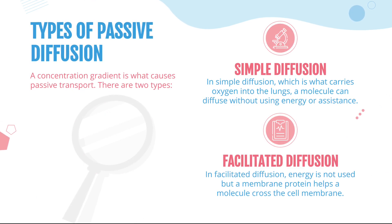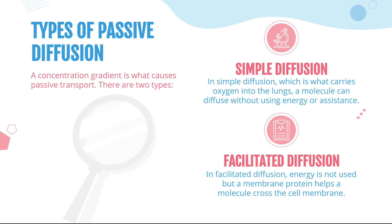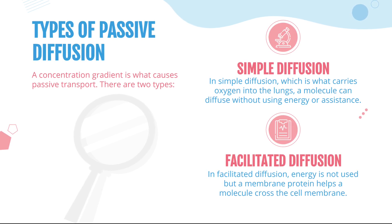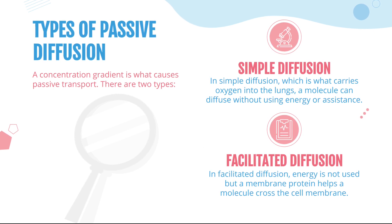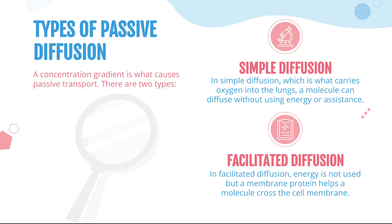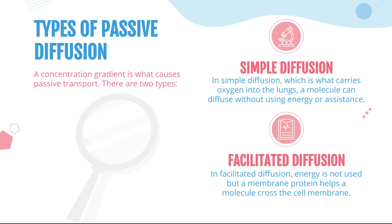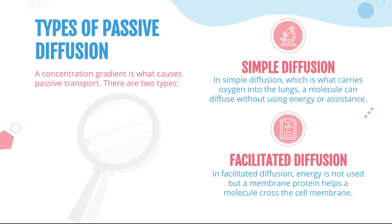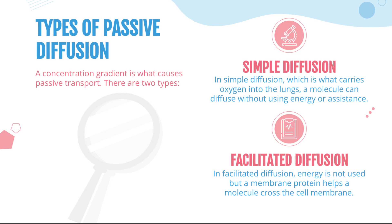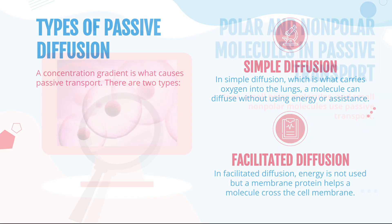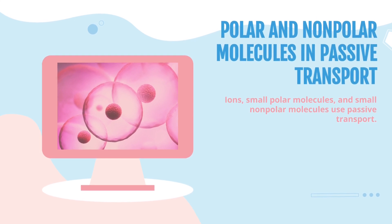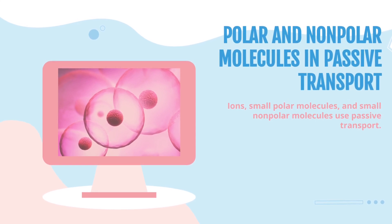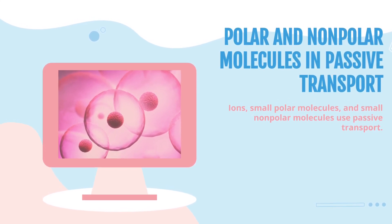Types of Passive Diffusion: a concentration gradient is what causes passive transport. There are two types — Simple Diffusion and Facilitated Diffusion. In Simple Diffusion, which is what carries oxygen into the lungs, a molecule can diffuse without using energy or assistance. In Facilitated Diffusion, energy is not used but a membrane protein helps a molecule cross the cell membrane. Ions, small polar molecules, and small non-polar molecules use passive transport.